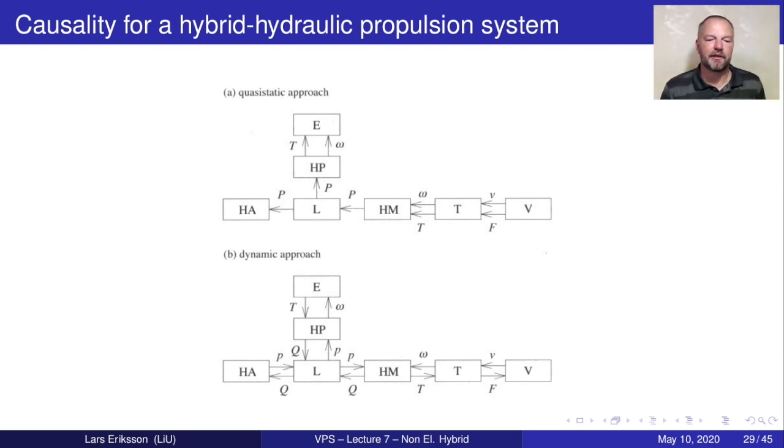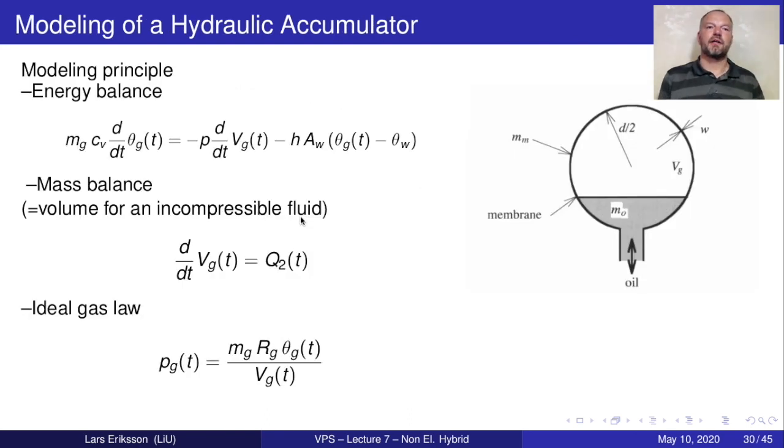The causality looks very much like you have seen in many other cases where we have the vehicle and the information is propagated back up to the engine or to the hydraulic accumulator, where we have this linkage system that tells how the power split should be done. Coming to the hydraulic accumulator, the modeling is done with the energy balance and the mass balance. The energy balance is straightforward first law thermodynamics where we have the energy stored, which is encapsulated by the temperature denoted by theta, then we have the mechanical work which is p dV work, and then we have heat transfer.